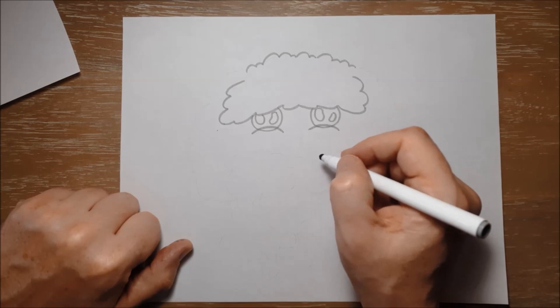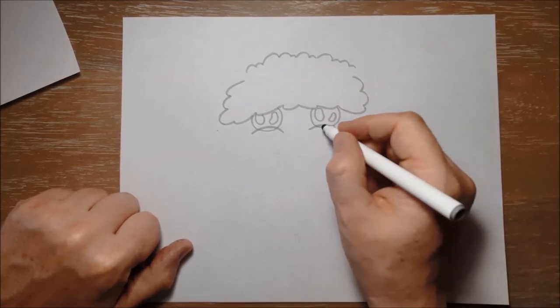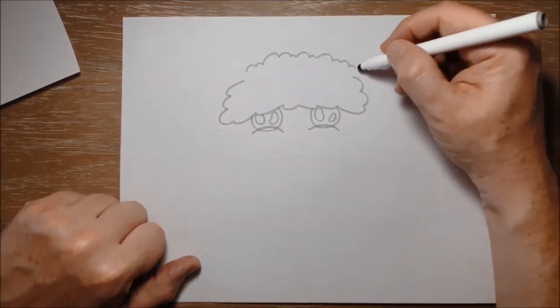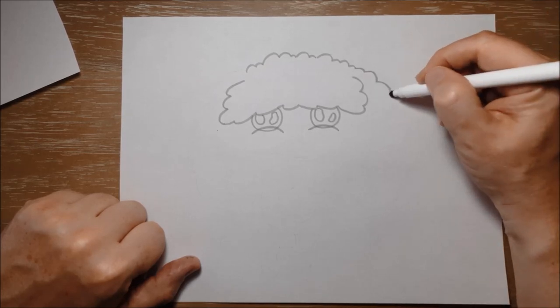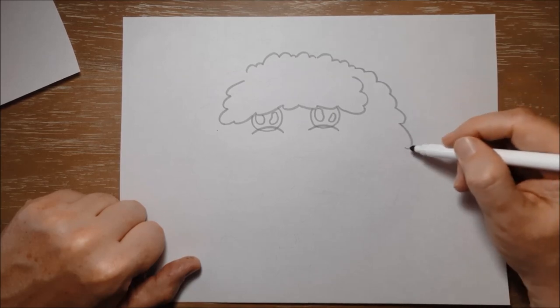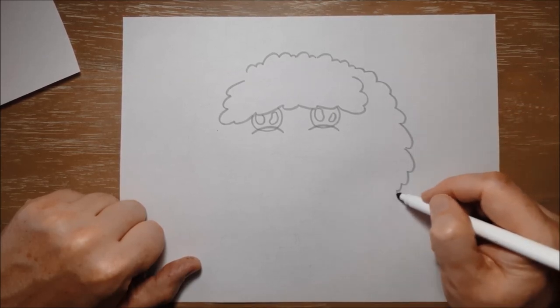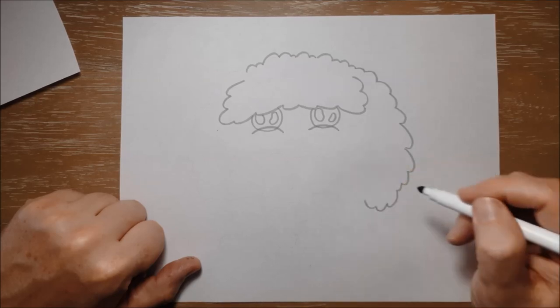So when we go over this with our black marker we're not going to do the bottom part of those eyes. So she also has big furry ears so I'm going to continue this kind of bumpy cloud shape like this all the way down to there.